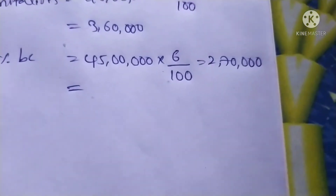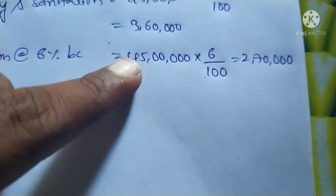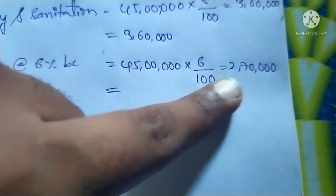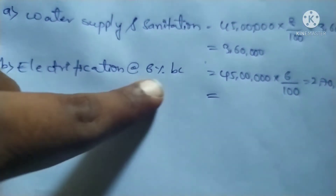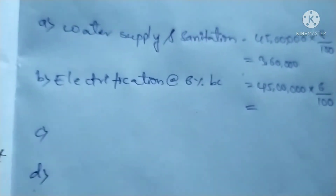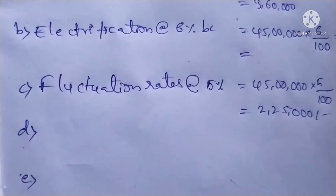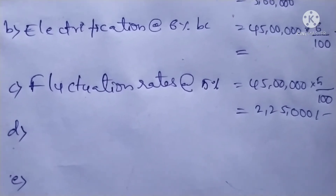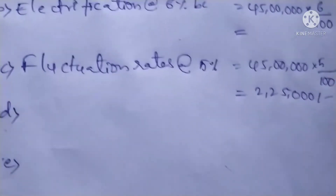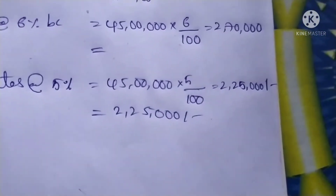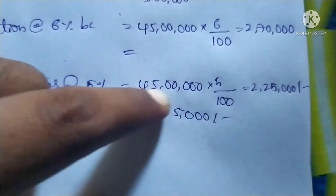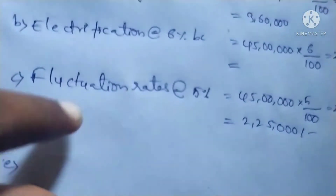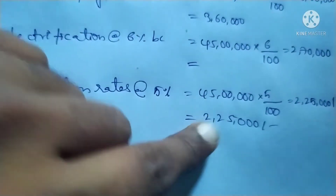Next, fluctuation of rates is 5% of building cost. 45 lakhs into 5 divided by 100 gives 2 lakhs 25 thousand rupees as the cost for fluctuation of rates.